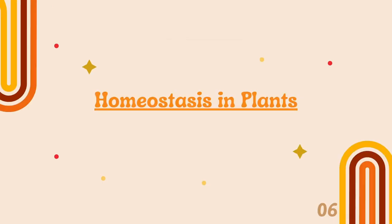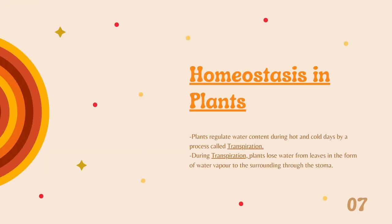Next, we are going to look at homeostasis in plants. Plants regulate water content during hot and cold days by a process called transpiration. During the transpiration process, plants lose water from the leaf in the form of water vapor to the surrounding through the stomata.